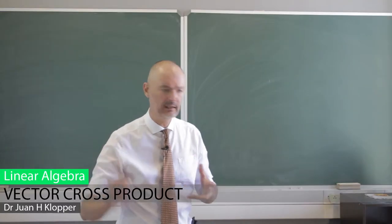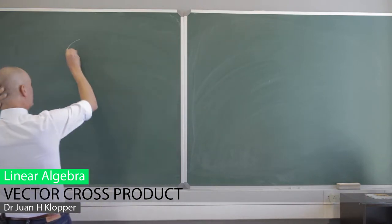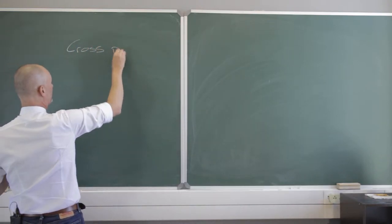So yesterday we discussed the vector inner product, the inner product between two vectors. Today let's look at the other form of vector multiplication, that is the cross product.